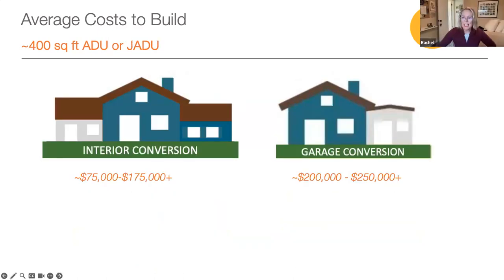Interior conversions are more economical because they save on material costs for exterior walls and sometimes interior finishes such as drywall, trim, and flooring. But integrating with the existing structure can also add costs to the design and construction process. In this case, we have included a rough estimate for a 400 square foot unit — the size of a typical two-car garage.